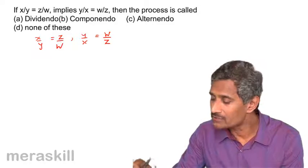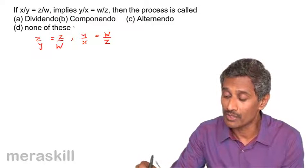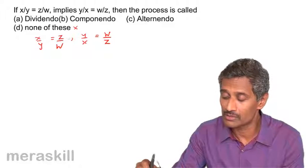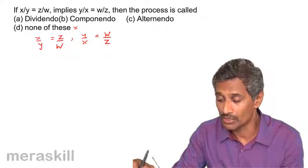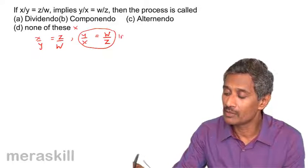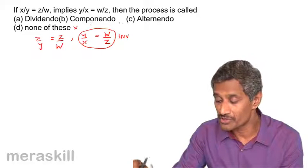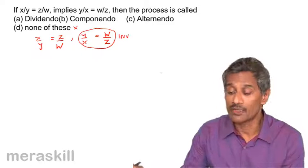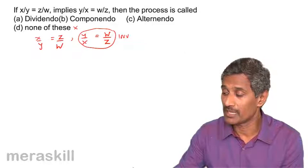Now, do we have invertendo among these? No. So it's going to be none of these. This is not dividendo, this is not componendo, this is not alternendo. The process is definitely clearly invertendo rule, which is not among. So none of these is the option that we have over here.